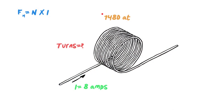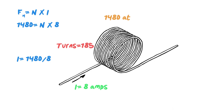Let's do another example. In this case, I've got my magnetomotive force at 1480 ampere turns, and my current is 8 amps, but I don't know how many turns I have. Here's the formula — let's plug in what we know. 1480 equals N times 8. To solve for turns, we're just dividing. Moving that formula around, N is 1480 divided by 8, which works out to be 185 turns. Again, just plug in the formula, write it out, plug in the numbers you know, and calculate from there.